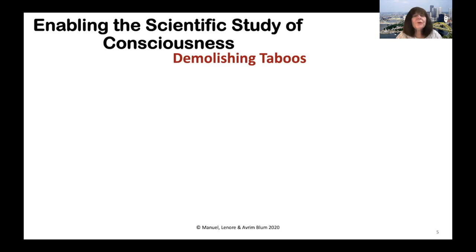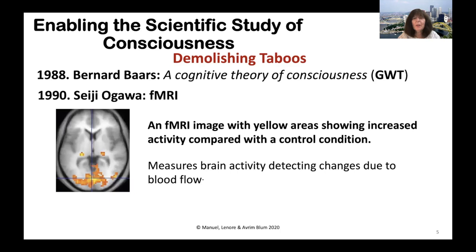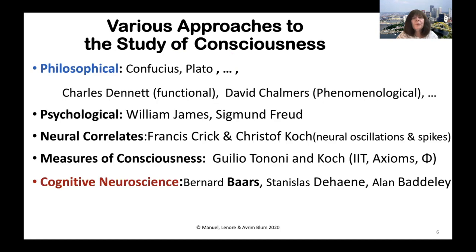Until about 30 years ago, the scientific study of consciousness was taboo. Then in 1988, cognitive neuroscientist Bernard Baars published a cognitive theory of consciousness where he discusses the global workspace theory. And then in 1990, with the advent of fMRI technology, neuroscientists were able to look inside the brain non-intrusively and see the activity when people were performing conscious tasks. In 1995, Francis Crick wrote 'The Astonishing Hypothesis,' where he talks about neural correlates as a way of understanding consciousness.